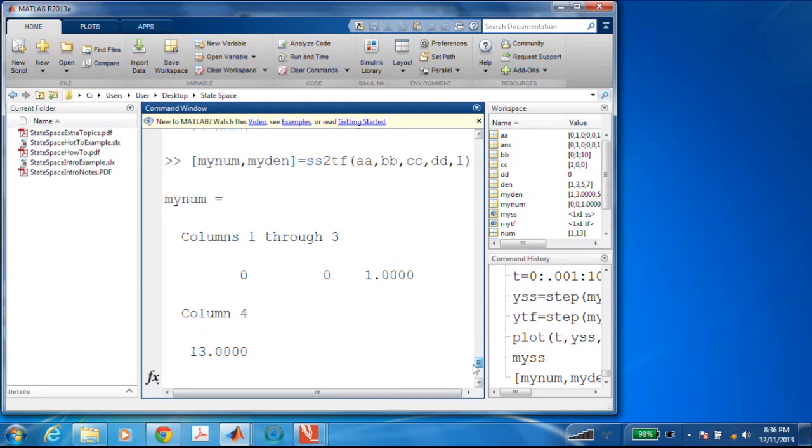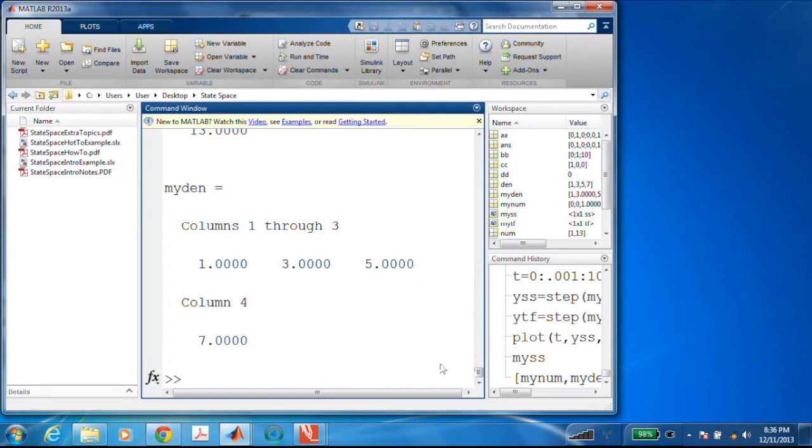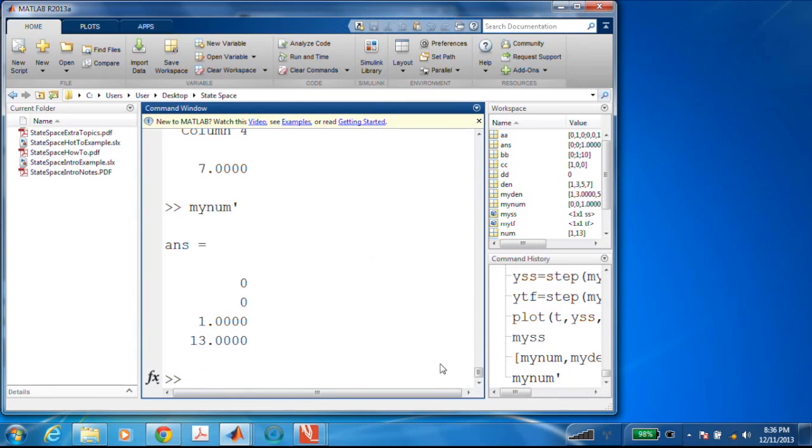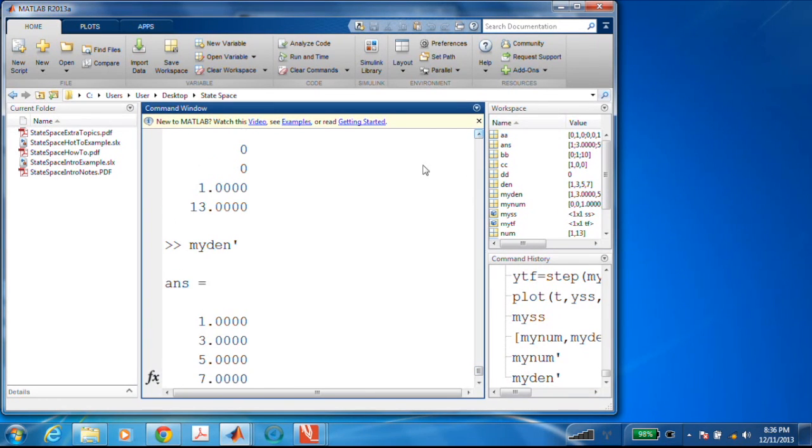It's kind of squirreled away. We've got my num and my den sitting there. But if we look at my num, I'll look at it this way and this way, and I'll scroll up just a wee bit. We can see that my numerator is exactly what I had in the my TF.